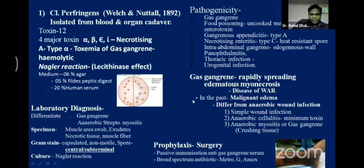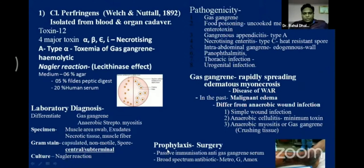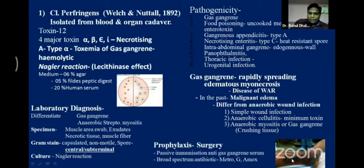For diagnosis: take a deep tissue swab and observe for central and subterminal spores; do culture. Also demonstrate the Nagler reaction for alpha toxin. When you palpate the gangrenous tissue, you observe a cushion-type feel — because of the huge fermentation of muscles, necrotizing tissue rapidly spreads forming gas bubbles. Prophylaxis includes passive immunization with anti-gas gangrene serum, and broad-spectrum antibiotics like metronidazole and gentamicin.